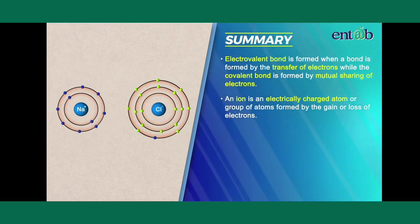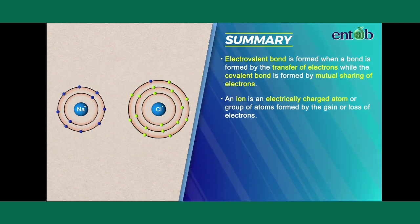An ion is an electrically charged atom or a group of atoms formed by the gain or loss of electrons.